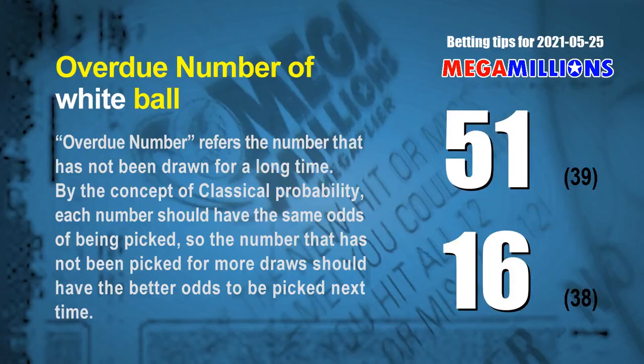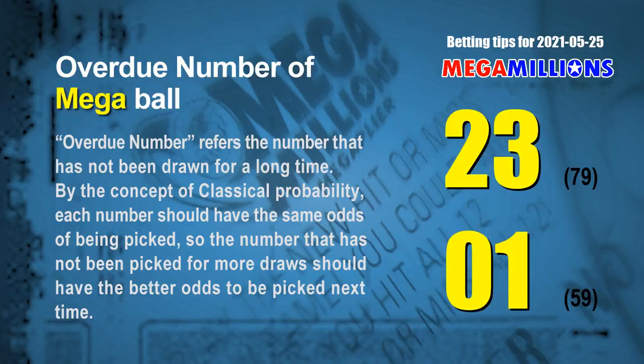Overdue numbers refer to numbers that have not been drawn for a long time. By the concept of classical probability, a number not picked for more draws should have better odds to be picked next time. The two most overdue white balls are 51 and 16: white ball 51 has not been drawn for 39 draws, white ball 16 has not been drawn for 38 draws. The two most overdue Mega Balls are 23 and 01: Mega Ball 23 has not been drawn for 79 times, Mega Ball 01 has not been drawn for 59 times.